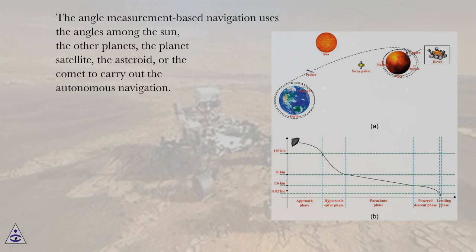The angle-measurement-based navigation uses the angles among the sun, the other planets, the planet satellite, the asteroid, or the comet to carry out the autonomous navigation.